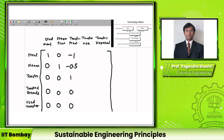For the toaster use phase: there is no direct connection with steel manufacturing or steam production, so those are 0. The use phase takes 1 toaster as input (−1). The functional unit is 1000 toasts — the lifetime output of the toaster — so that is +1000. At the end of the use phase, a used toaster is output (+1).